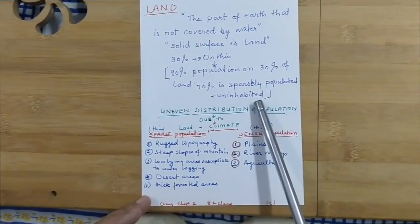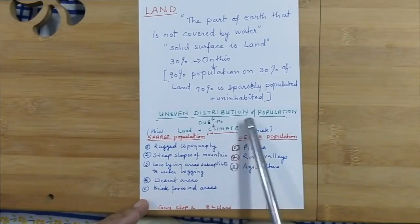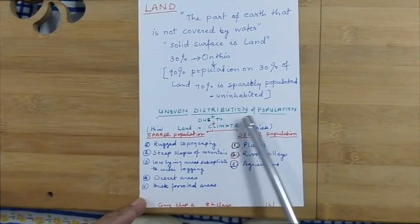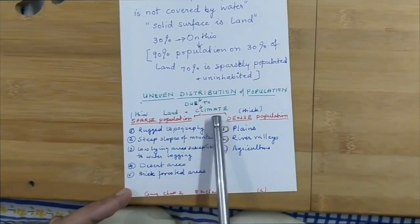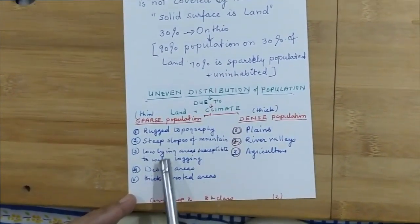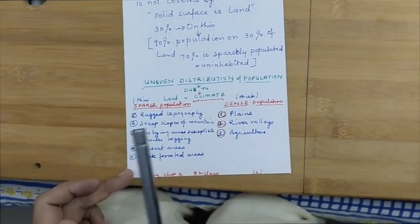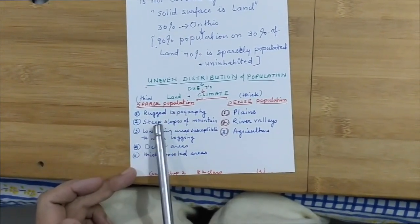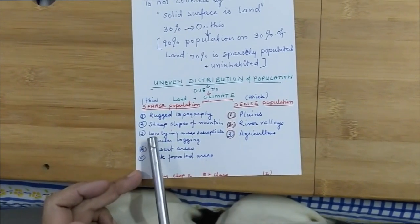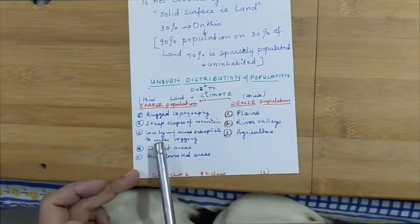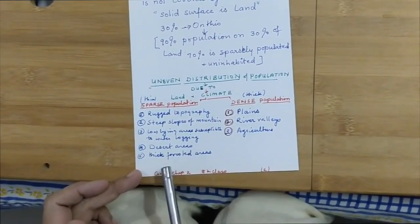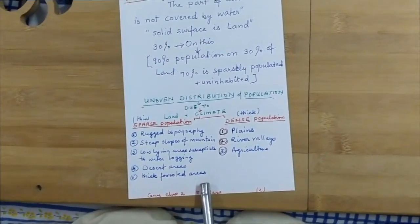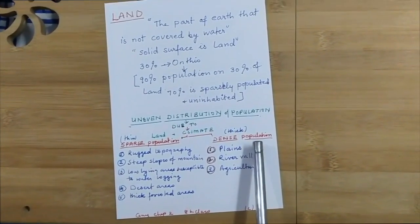What is the reason for the uneven distribution of population? It can be due to land and climate differences. Why do we have sparse population? Sparse means thin, few people. It is because of the rugged topography, steep slopes of mountains, low-lying areas susceptible to waterlogging, desert areas, and thick forested areas.